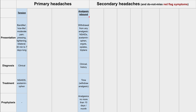The treatment for analgesic rebound headache is just time. You have to stop the analgesic and they'll get better with time — they have to kind of suffer through it. The prophylaxis is to instruct patients not to take analgesics for more than 10 days of the month.